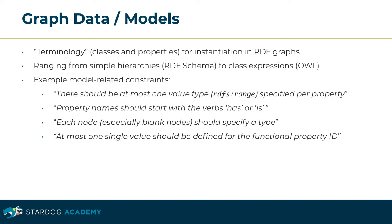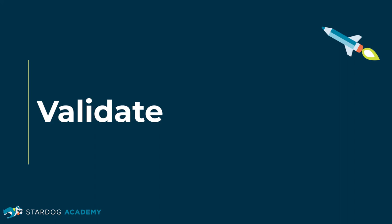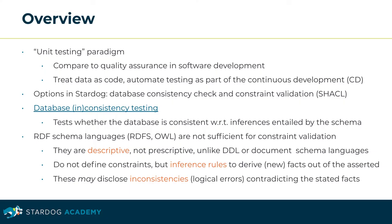This section is on the Validate task. Let's look at some means to implement data quality tests. Following the unit testing paradigm in software development, we suggest treating data as code and setting up its automated testing as part of a continuous development process. For this end, Stardoc supports checking the database for consistency and constraint validation via the SHACL standard.